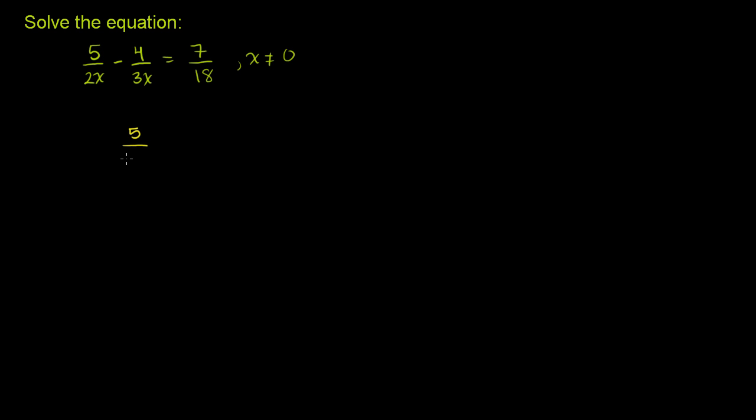Let me just rewrite it so we have some space. 5 over 2x, and then we have minus 4 over 3x is equal to 7 over 18.